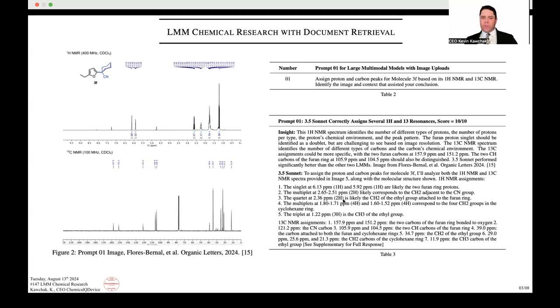It says I'll analyze both the proton NMR and 13C NMR provided in image 5. The proton NMR assignments: the singlet at 6.13 and 5.9 ppm are likely the two furan ring protons. So if you look at the structure, this is the furan ring, and there's only two protons on it. The quartet at 2.36 is likely the CH2 of the ethyl attached to the furan ring. And the multiplicity matters.